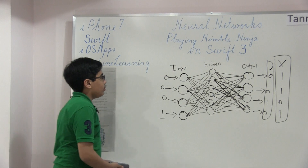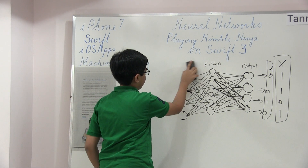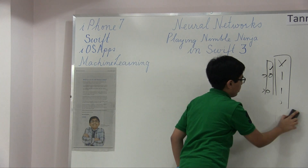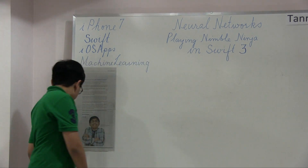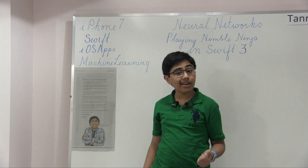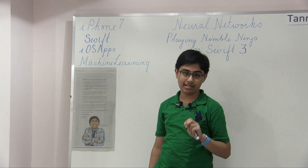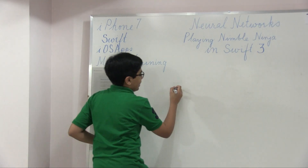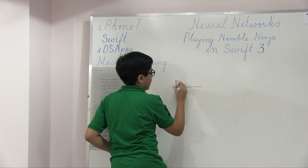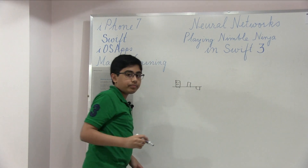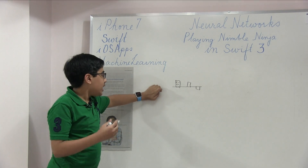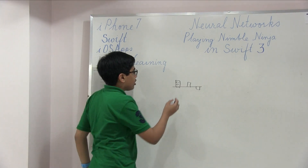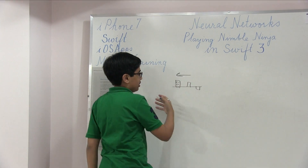So we're not going to use that binary counter neural network - it was a nice example of how a neural network works. What we're actually doing in this video is mixing Nimble Ninja with neural networks to create a bot that can play the game almost infinitely. Now if we were to feed data from the game into the neural network, what would the data be? We have the current speed at which the obstacles are running towards the ninja, and we have the x-value of the nearest obstacle.